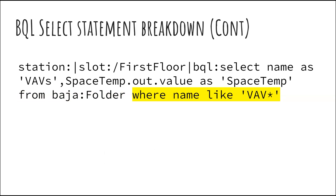The second half of our predicate is where we get far more specific with our filtering. Here we used 'where name like VAV*' — this removes any results that don't match the statement. We're looking for a folder whose name is like VAV and we added a wildcard to make sure we find them all. This section most commonly requires the most thought, but ultimately it's just a true-or-false statement that filters out results, which makes it simpler to figure out.